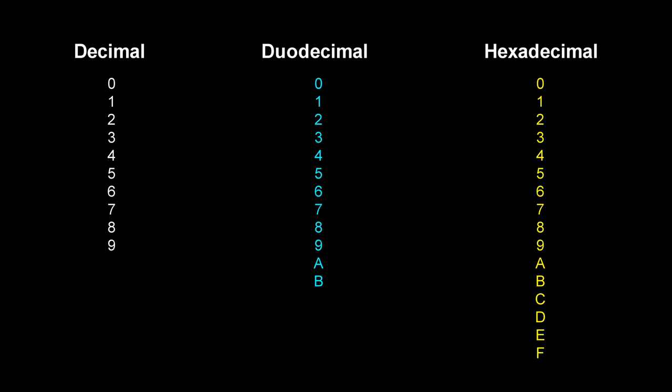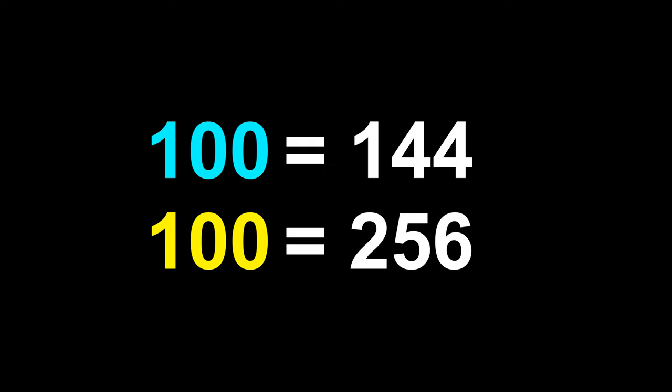In this video all decimal numbers will be white, all duodecimal numbers will be cyan, and all hexadecimal numbers will be yellow to avoid confusion, since the same combination of digits will mean something different depending on what base you are using.